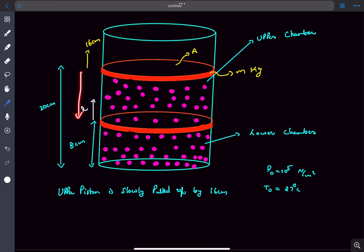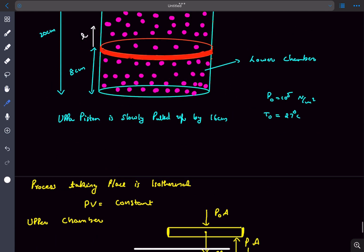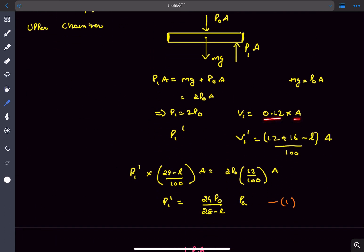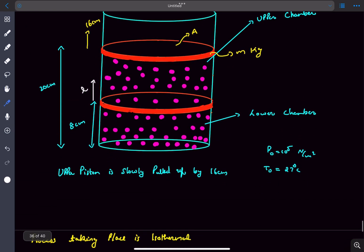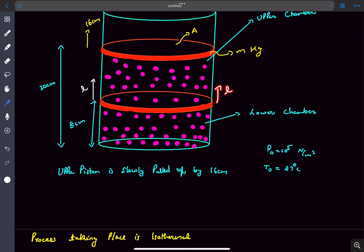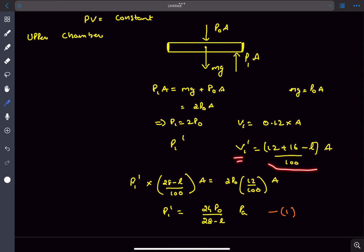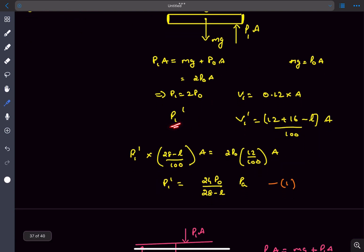The initial volume would be the length multiplied by the area, and this length is 20 minus 8, that is 12 centimeters. Converting that to meters, it's 0.12 times A. In the final volume, the bottom lid moves up by L and the upper lid moves up by 16, so the length increases by 16 minus L. The initial length was 12, so finally the length becomes 28 minus L centimeters. V1 dash is 28 minus L times A, and the final pressure in the upper chamber is P1 dash. Now we can write PV equals constant and get a relation between P1 dash and L. That's equation number one.